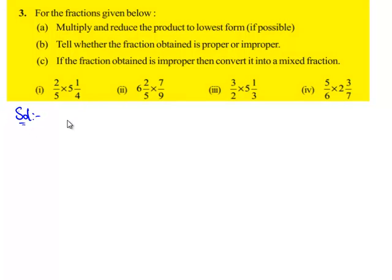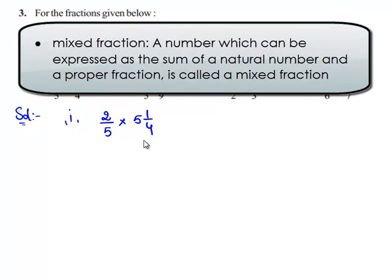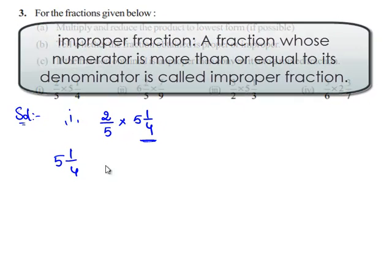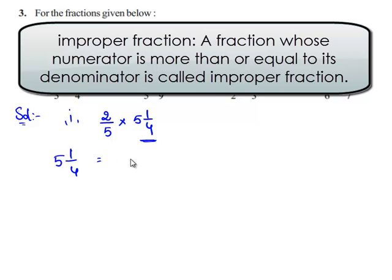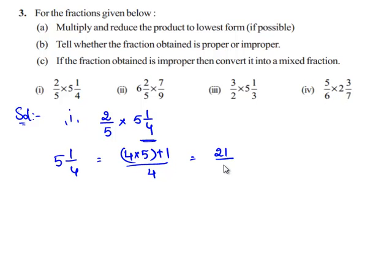Let us take the first expression: 2/5 times 5 1/4. In the given expression, 5 1/4 is a mixed fraction. So, let us convert 5 1/4 into its improper form. It is 4 times 5 plus 1 divided by 4, which is equal to 21/4. Therefore, we have 2/5 times 21/4.